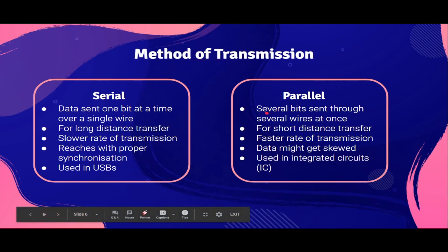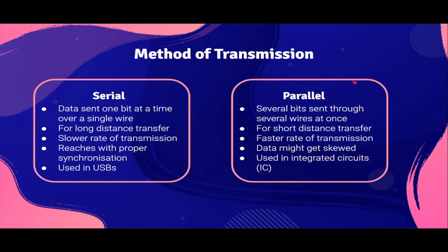Next, parallel. Parallel is when several bits of data are sent through several wires at once. Usually, one byte of data is transferred at once, and each wire carries one bit. This is used for short distance transfer because there are many wires, and it has a faster rate of transmission because one byte is transmitted at a time. But data can get skewed — skewed is a very important word, it means mixed up or jumbled. Parallel data transmission is used in integrated circuits.